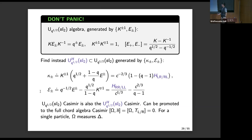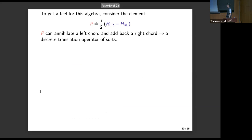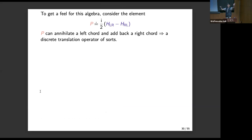Furthermore, we can find a Casimir that can be promoted to a full Casimir of the algebra. Now let me give some feel for the algebra by focusing on a particular generator — the momentum generator. This object basically creates a left chord and annihilates a right chord, so it's a discrete translation operator: it removes one of the left chords and puts it back on the right, thus moving the matter particle in the wormhole.